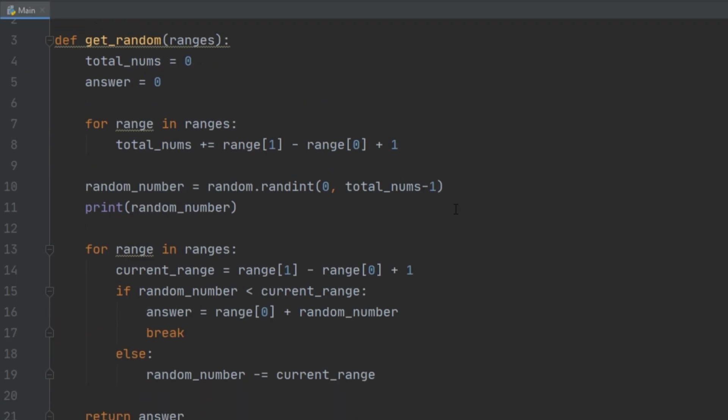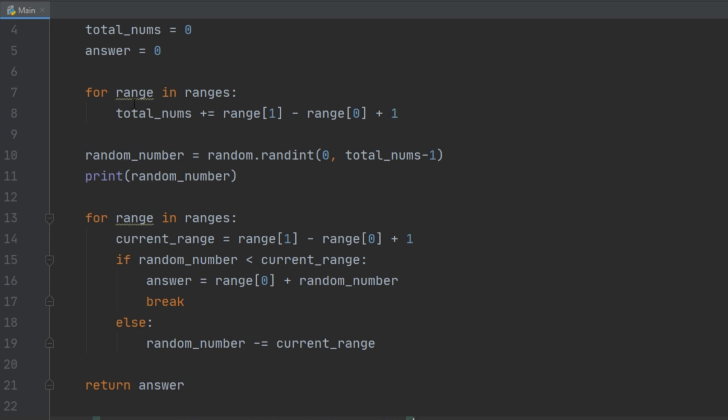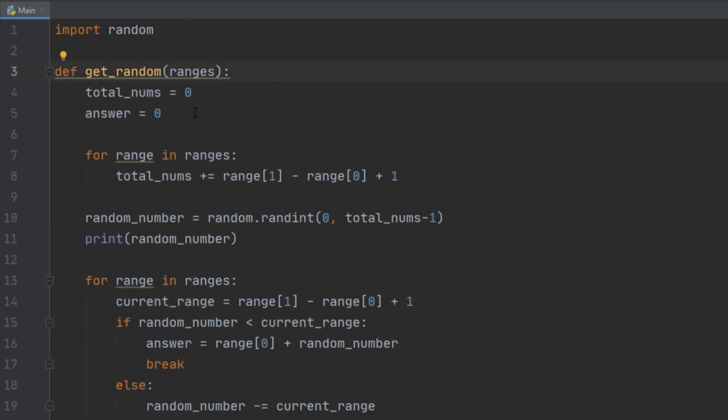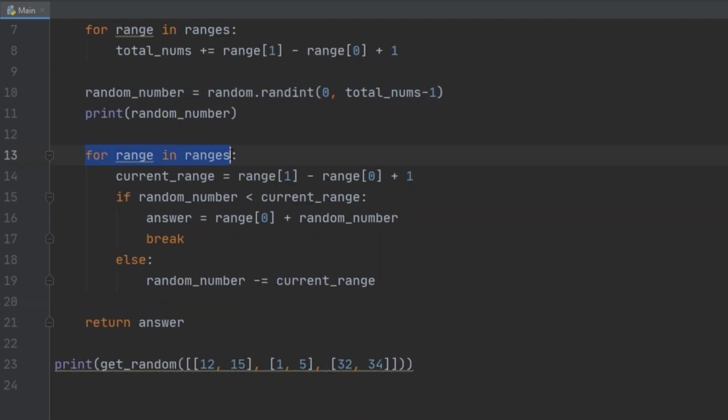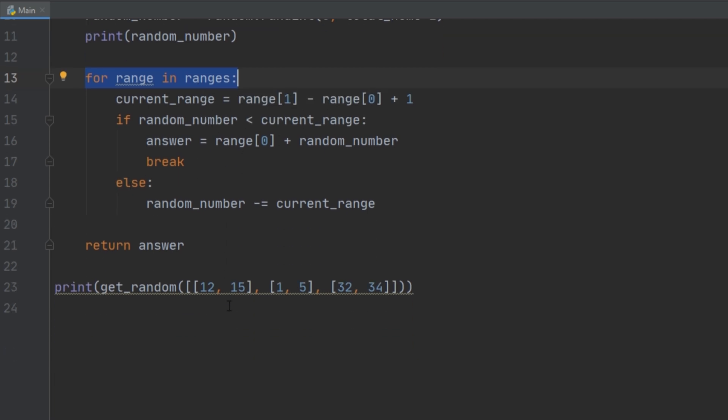One thing that we forgot to talk about is the time complexity. If we assume the size of the ranges is n, we are looping through the ranges once, so that gives us a time complexity of n. We can assume getting this random number is constant time. Once again, we are looping through all the ranges, but all the operations in here are constant time. Our time complexity would be big O of n plus n - that's 2n. We always drop constants in big O notation, so our time complexity is going to be big O of n.